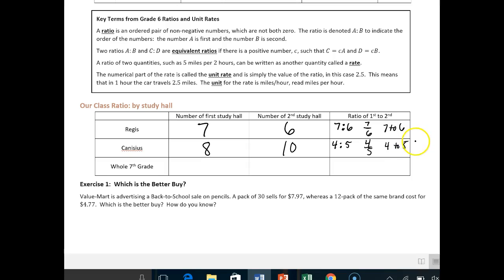Alright, so what do we do? Again, we just took that fraction of eight over ten and then just simplified it to get that four over five. Notice how it was first to second. So I didn't put six to seven, or six over seven, or five over four. I wanted the first study hall, which was this number first, then this number.